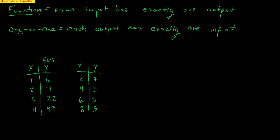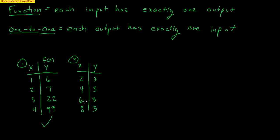Some functions are 1-to-1, but not all. A 1-to-1 function is a special function where each output has exactly one input. Looking back at the first example: output 6 goes to input 1 only, 7 goes to 2 only, 22 goes to 3 only, 99 goes to 4 only — so that is a 1-to-1 function. In the second example, the output 3 has multiple inputs: 2, 4, 6, and 8. That means this function is not 1-to-1.